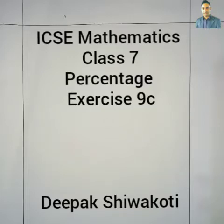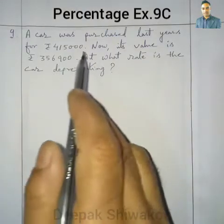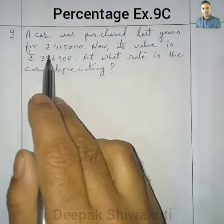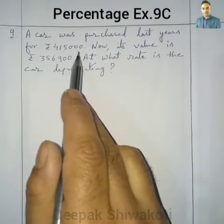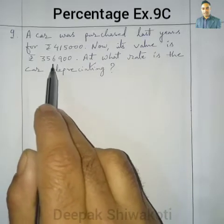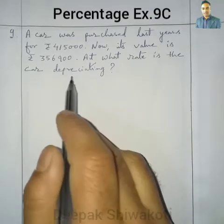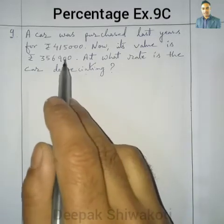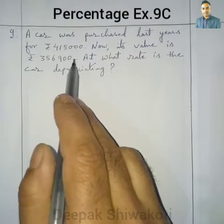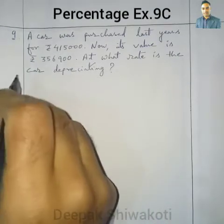Welcome to class 7 mathematics. We are in the percentage chapter, exercise 9C, question number 9. A car was purchased last year for rupees 4,15,000. Now its value is rupees 3,56,900. At what rate is the car depreciating? Depreciating means the value of the money decreasing for that item. So here the solution will be: